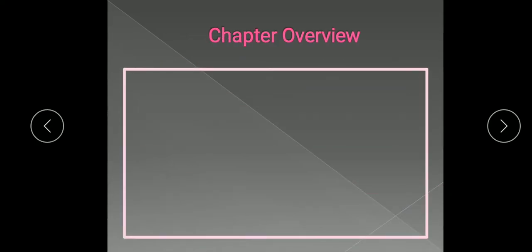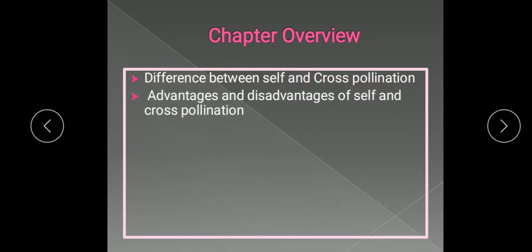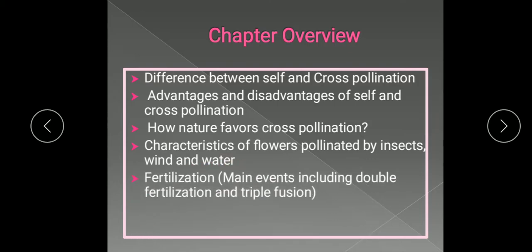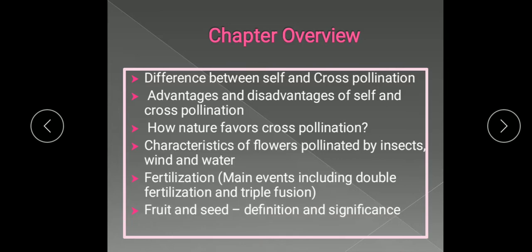Let me outline the topics we are going to study: the difference between self and cross pollination, advantages and disadvantages of self and cross pollination, how nature favors cross pollination, characteristics of flowers pollinated by insects, wind, and water — the different types of cross pollination — and the fertilization process, including double fertilization and triple fusion, and the last topic is the fruit and seed and its definition and significance. Today in the first part of this chapter we are going to study what is pollination, types of pollination, and advantages and disadvantages of pollination.